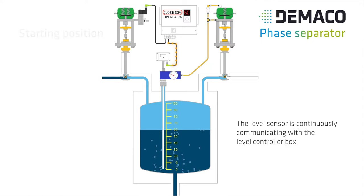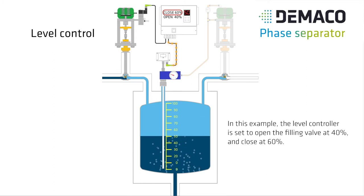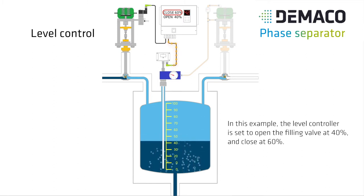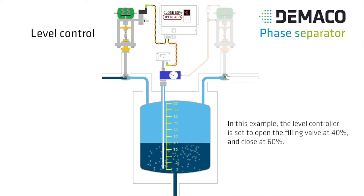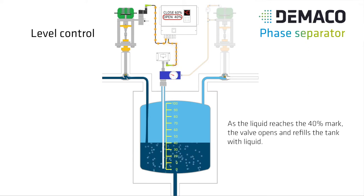The Level Sensor is continuously communicating with the Level Controller box. In this example the Level Controller is set to open the filling valve at 40% and close at 60%. As the liquid reaches the 40% mark, the valve opens and refills the tank with liquid.